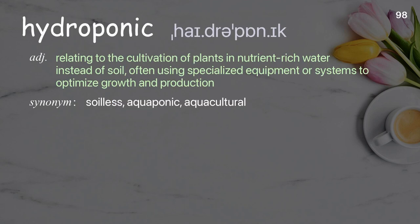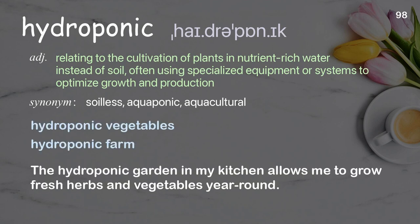Hydroponic: Relating to the cultivation of plants in nutrient-rich water instead of soil; often using specialized equipment or systems to optimize growth and production. Examples: Hydroponic vegetables. Hydroponic farm. The hydroponic garden in my kitchen allows me to grow fresh herbs and vegetables year-round.